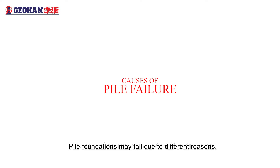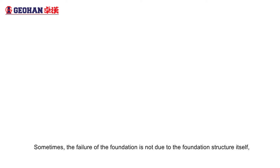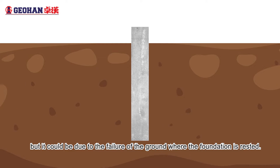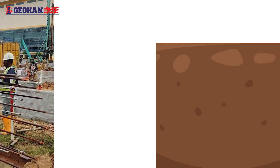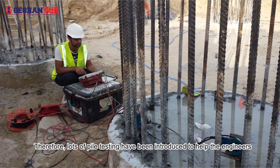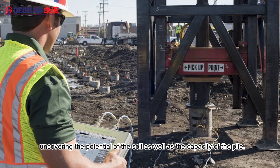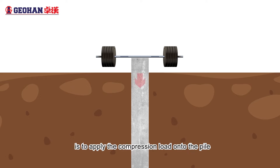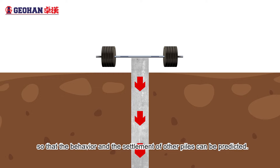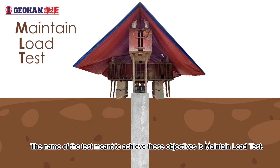Pile foundations may fail due to different reasons. Sometimes, the failure of the foundation is not due to the foundation structure itself, but it could be due to the failure of the ground where the foundation is rested. Therefore, lots of pile testings have been introduced to help engineers uncovering the potential of the soil as well as the capacity of the pile. One of the best ways to ensure the structural and geotechnical soundness of a pile is to apply the compression load onto the pile so that the behaviour and the settlement of other piles can be predicted. The name of the test meant to achieve these objectives is Maintain Load Test.